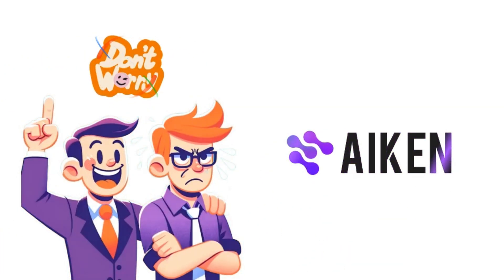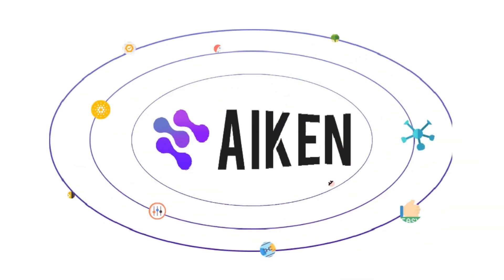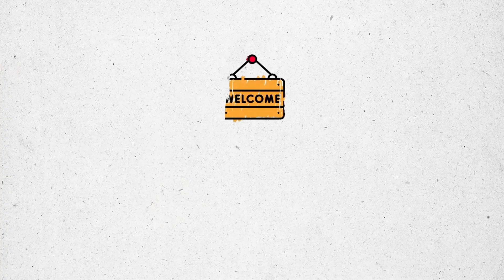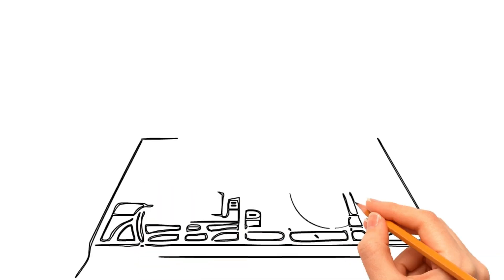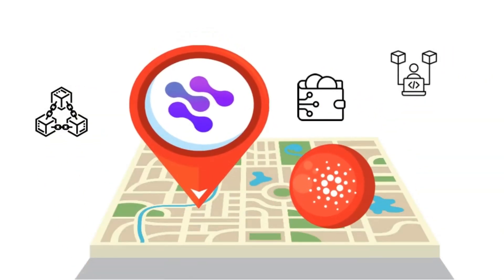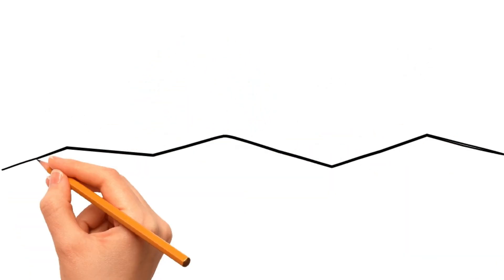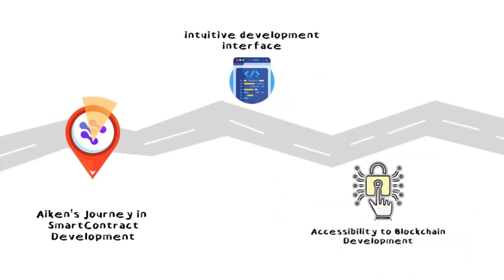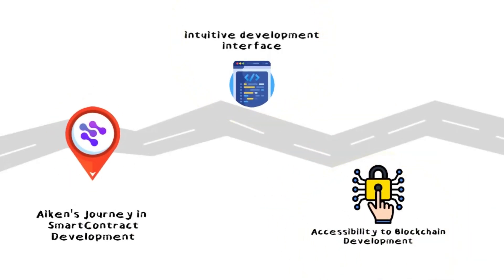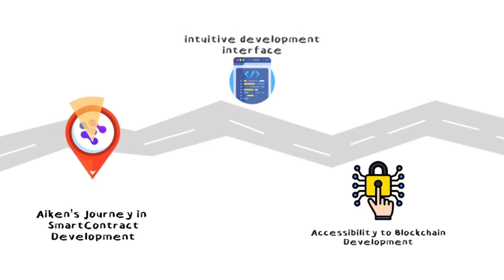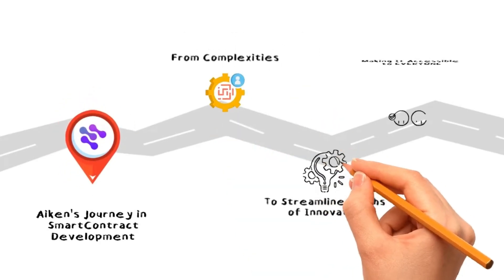But do not worry — wake up to Aiken, the first functional programming language you must know to excel in dApp creation on Cardano. Imagine Aiken as a GPS in the vast theme park of blockchain. Just like a GPS guides you through unfamiliar paths, Aiken navigates through the complexities of smart contract development with features like an intuitive development interface, making blockchain development accessible to everyone.